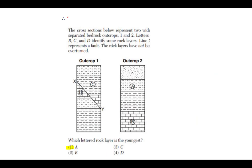Number seven: the cross section below represents two widely separated bedrock outcrops, one and two. Letters A, B, C, and D identify some rock layers. Line XY represents a fault — a crack in the rock layers. The rock layers have not been overturned. Which lettered rock layer is the youngest? The correct answer is A. We have two outcrops at two different locations.